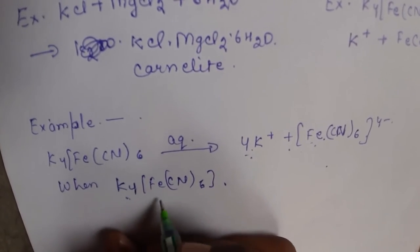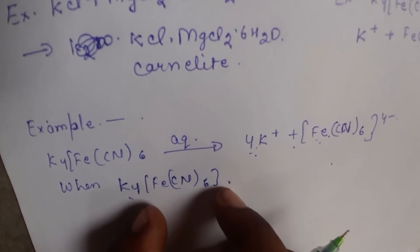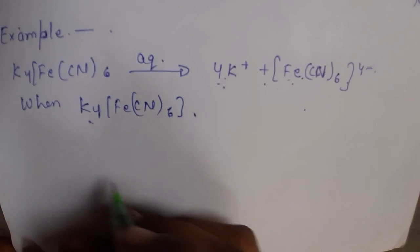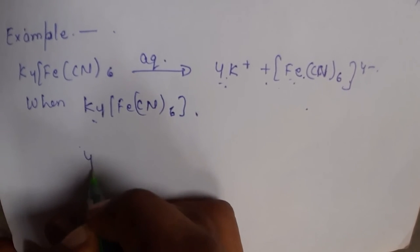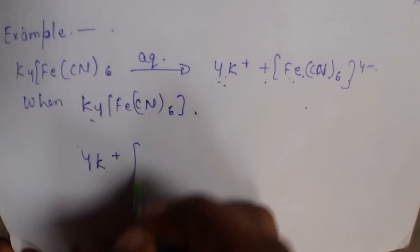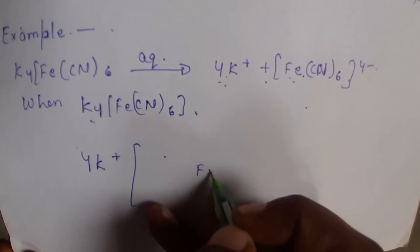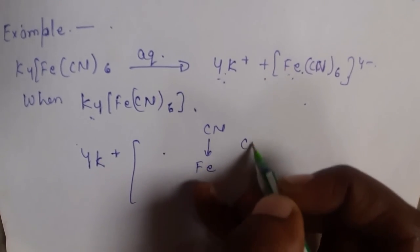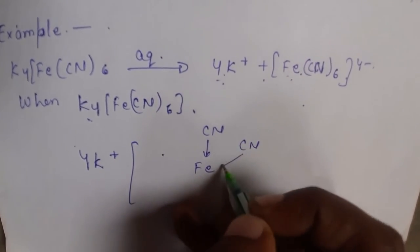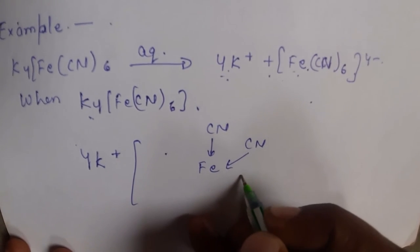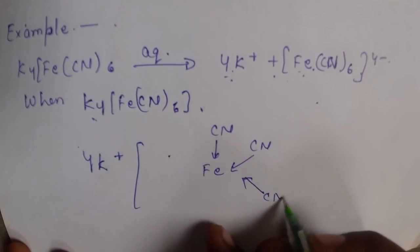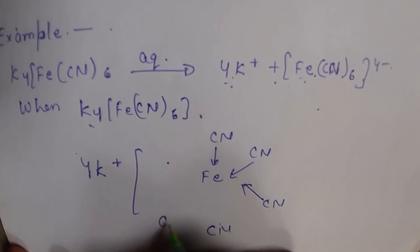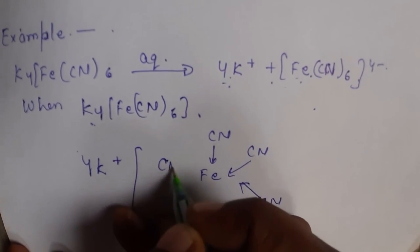Now, what is the structure? We have 4K⁺ and [Fe(CN)₆]⁴⁻. The CN⁻ ligands — there are 6 of them — donate to the central atom Fe.